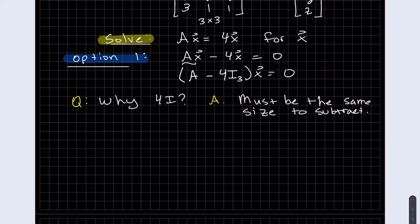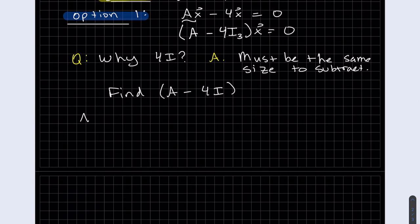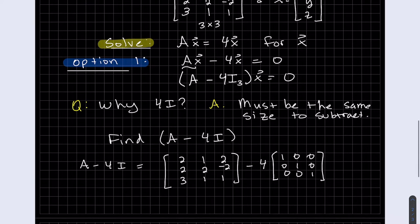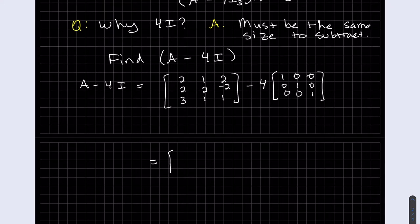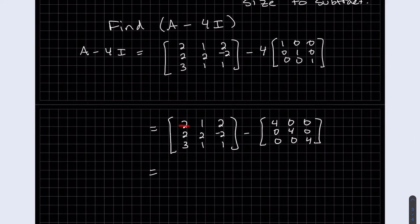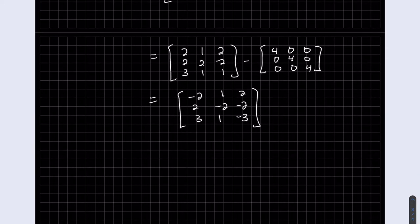Okay, so continuing with this, we want to find A minus 4I so that we can solve it as Ax equals 0. Now we can subtract item by item, so the only thing we need to subtract are these diagonals. Everything else will be 1 minus 0, 2 minus 0, and so forth. So it's 2 minus 4 on the diagonal.